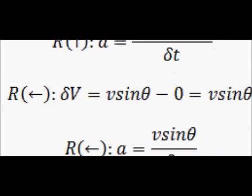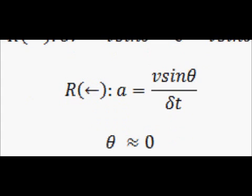We also have the horizontal direction to consider. The velocity of the second point is going to be V sin theta, from the diagram shown earlier. At the first point there isn't actually a horizontal velocity, because all the velocity is moving in the vertical direction. So the change in velocity is simply V sin theta over delta t.